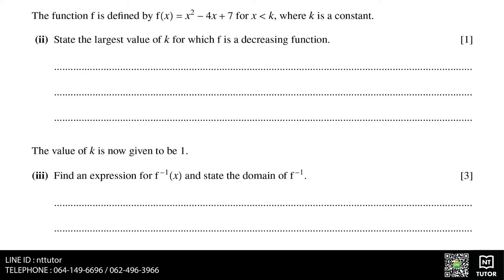Whenever the first part of the question asks you to rewrite an expression or prove an identity, you can guess that the next part will make you use that format. So instead of looking at x squared minus 4x plus 7, we should try and look at x minus 2 squared plus 3 instead.